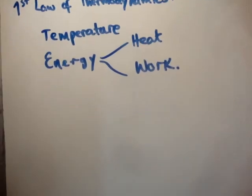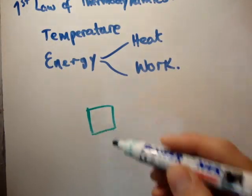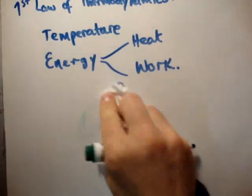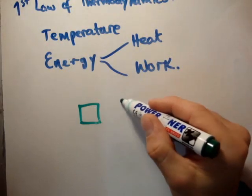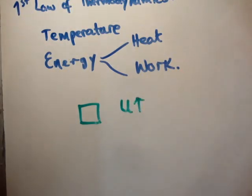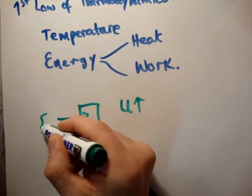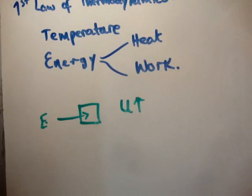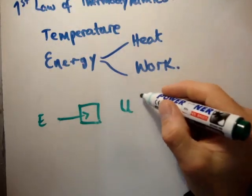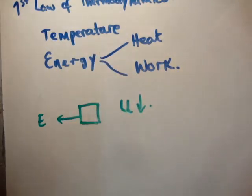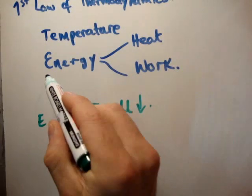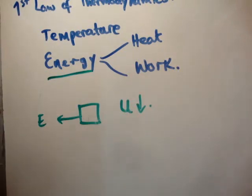Let's think about a thermodynamic system. I'm going to use the symbol capital U to talk about the internal energy of a system. If I were able to measure that the internal energy of my system went up, that means some energy must have flowed into my system somehow. If the internal energy goes down, some form of energy has gone out of my system.